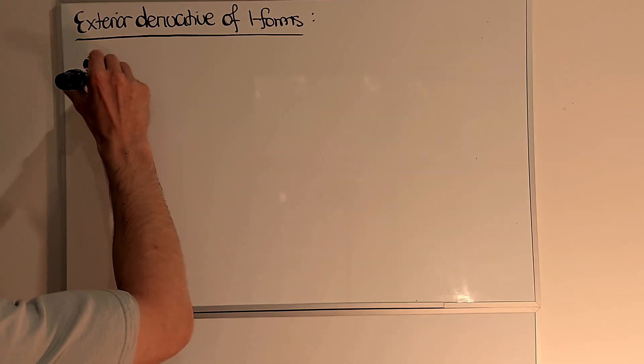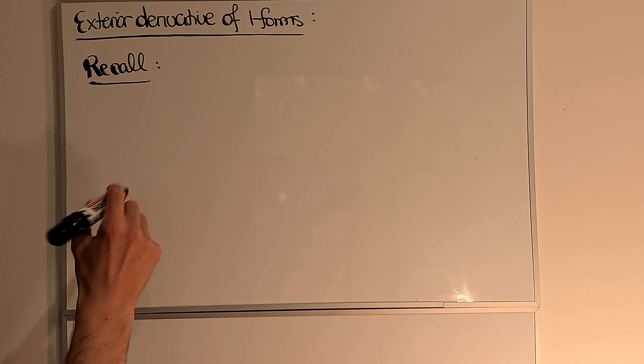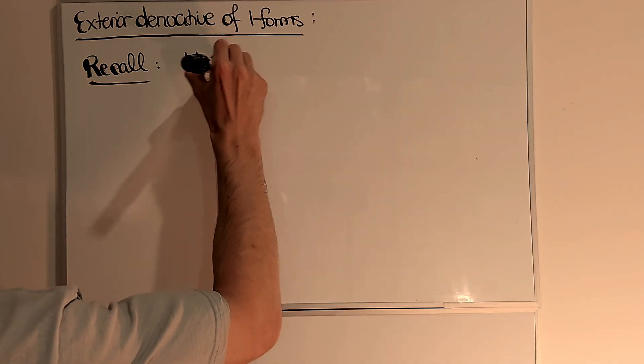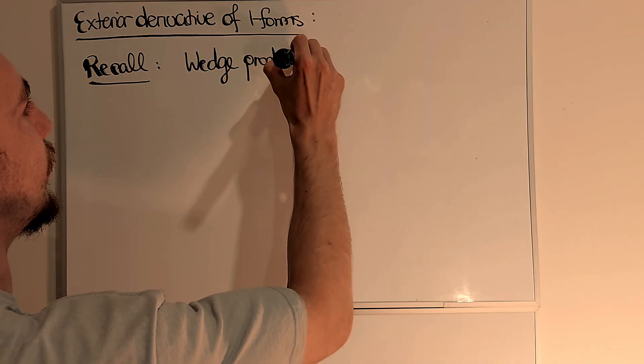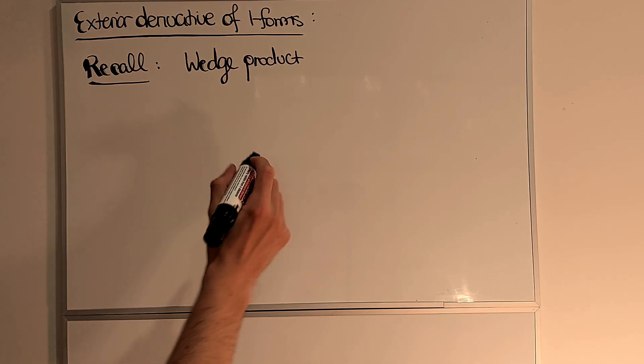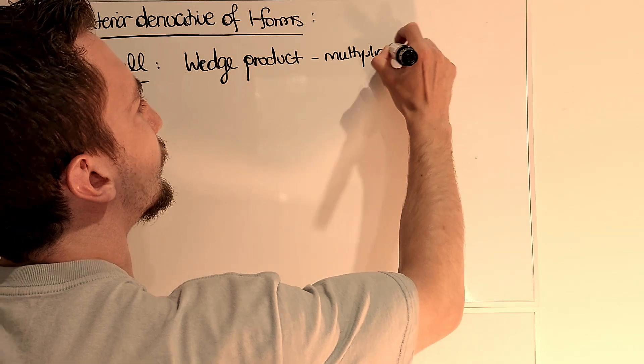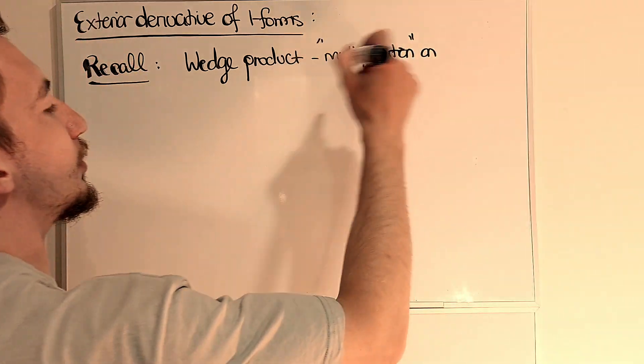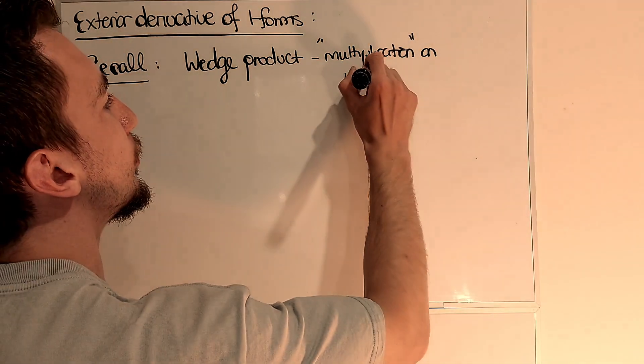Recall that the wedge product, which we thought of as a multiplication on one-forms.